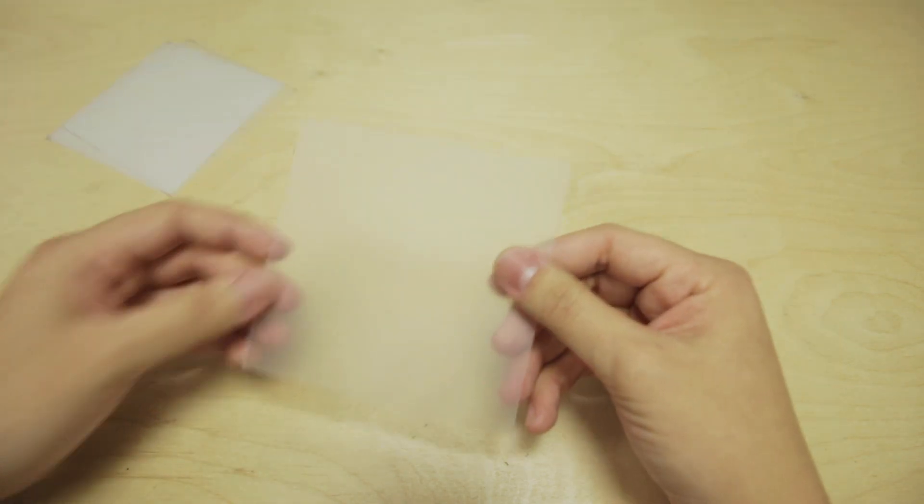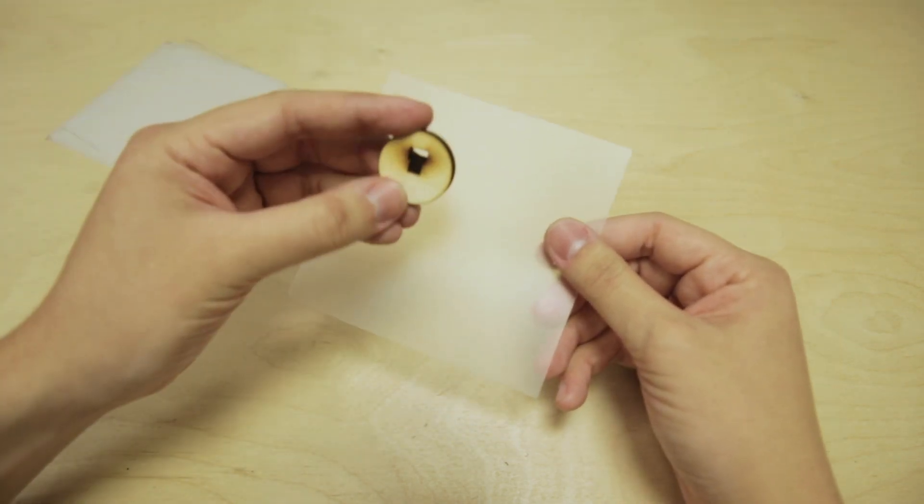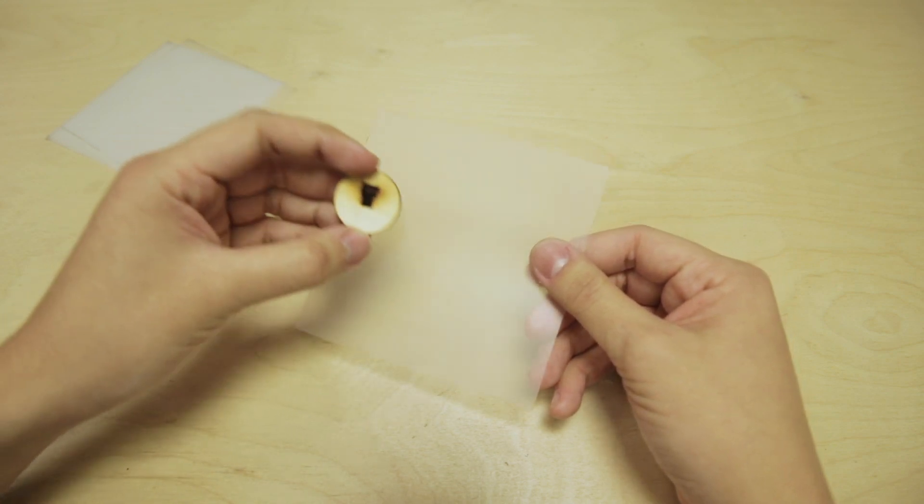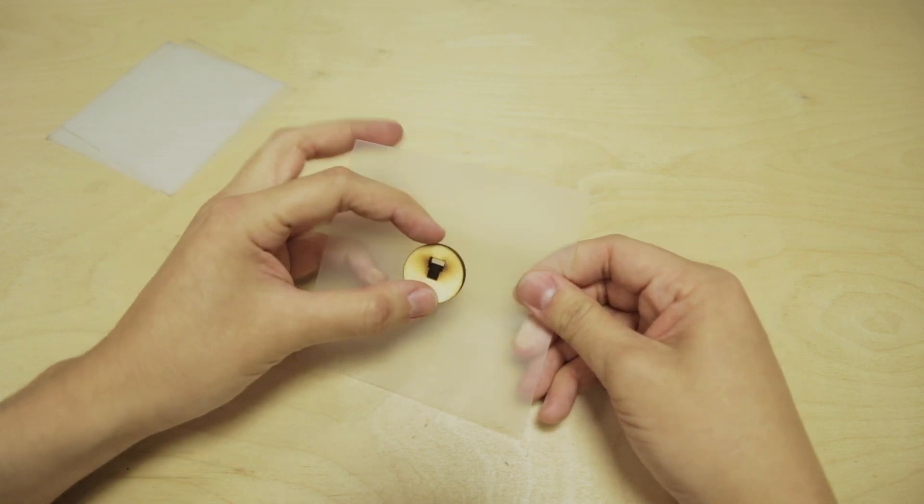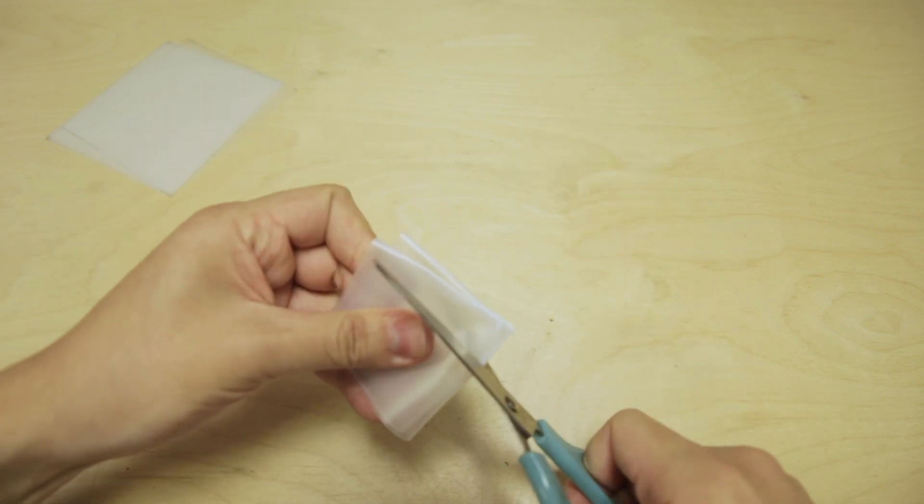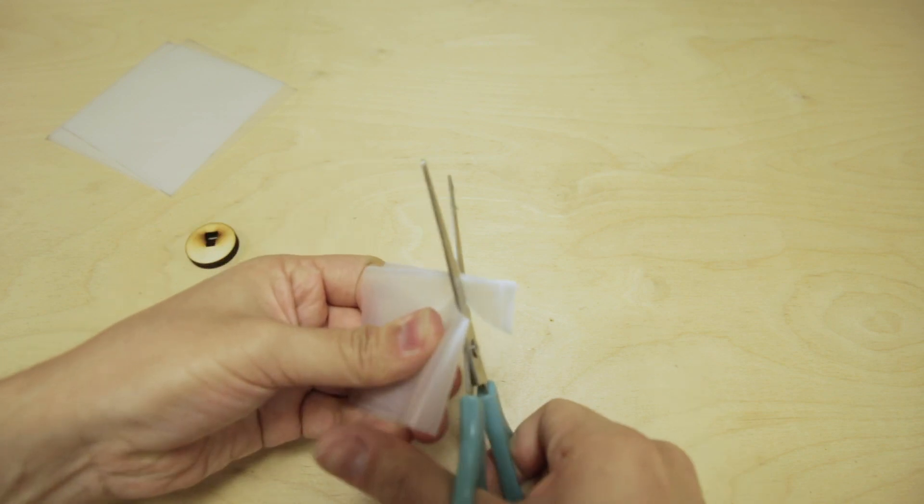Take one of the sheets. We're going to cut an approximately 30 millimeter diameter hole in the center so that the magic wand sensor module will be able to fit through. Using scissors to cut out a circular hole right down the middle.